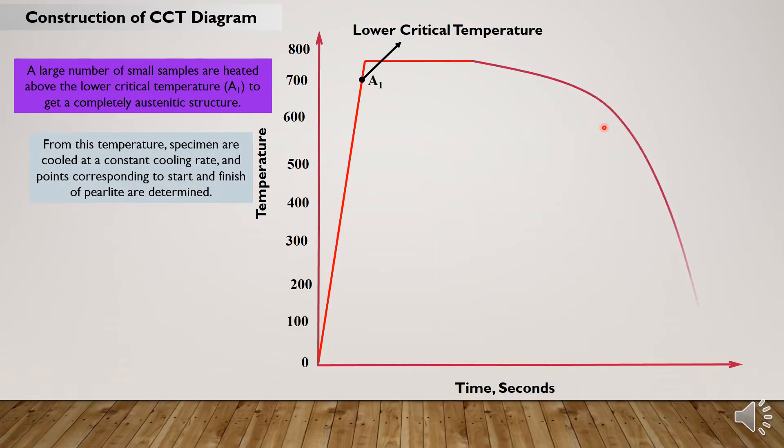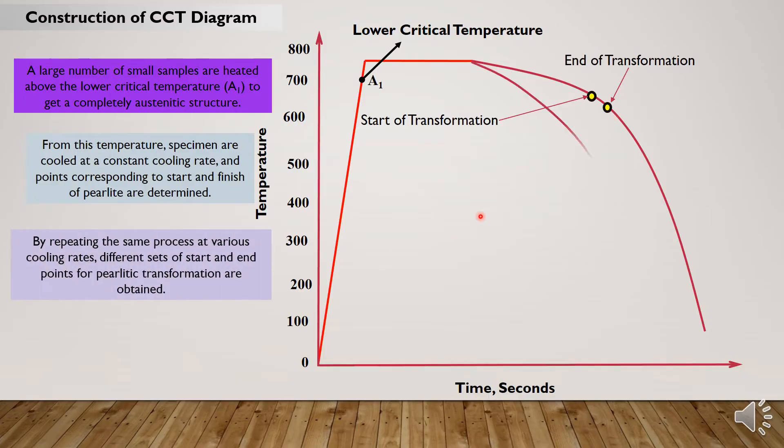From this temperature, specimens are cooled at a constant cooling rate and points corresponding to start of transformation and end of pearlitic transformation are determined. By repeating the same process at various cooling rates, different sets of start and end points for pearlitic transformation are obtained.